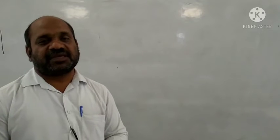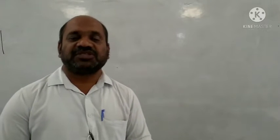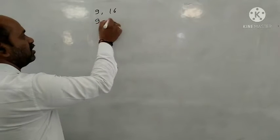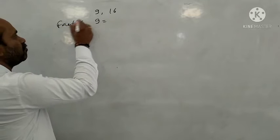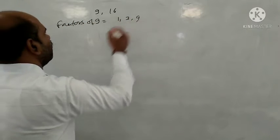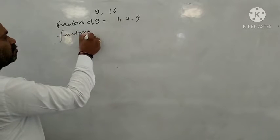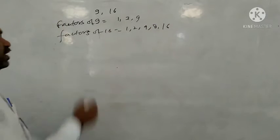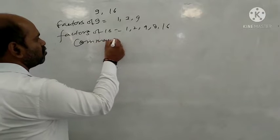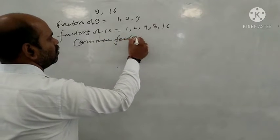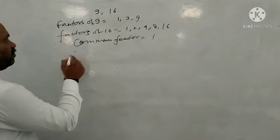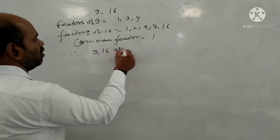What are co-prime numbers? Whether a number is prime or not, if the only common factor is 1, those numbers are co-primes. For example, take 9 and 16. Factors of 9 are 1, 3, and 9. Factors of 16 are 1, 2, 4, 8, and 16. The common factor is only 1, therefore 9 and 16 are co-primes.